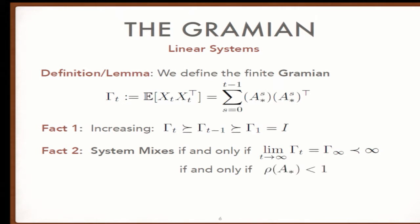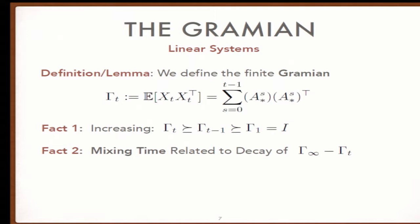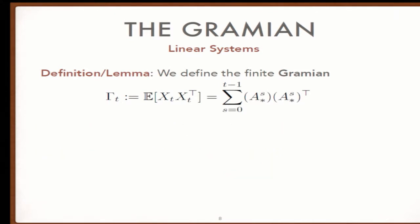More precisely, the system mixes if and only if the Gramian converges to some limit, which is true if and only if the spectral radius of A is strictly less than one. The mixing time relates to the rate of decay between the infinite time limit and the t-th version. For diagonalizable systems, mixing time is inversely proportional to the difference between spectral radius and one. For marginally stable systems, mixing time is infinite.